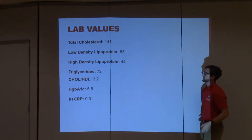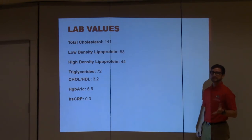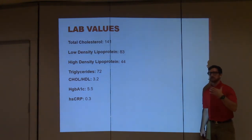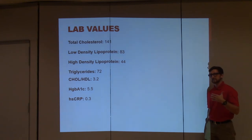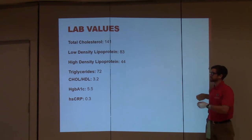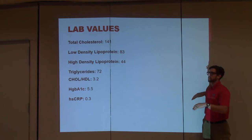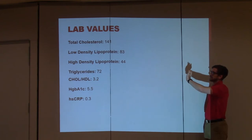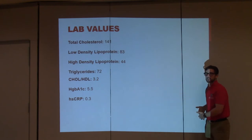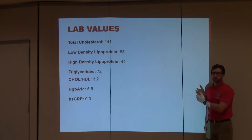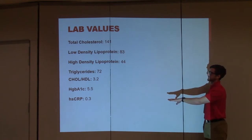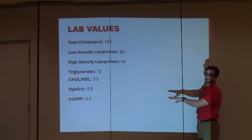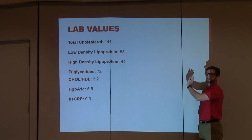Here were his lab values — pretty good lab values. However, there is literature stating that three out of four people — 75% of people who have a heart attack — have LDL below normal standards. So even though it looks normal and a doctor would say it's okay, it needs to be lower for him. Because of his familial hypercholesterolemia and his history of coronary artery disease, he needs to get these as low as possible. So even though he has an LDL of 83, HDL of 44, and triglycerides of 72, they need to be even lower.